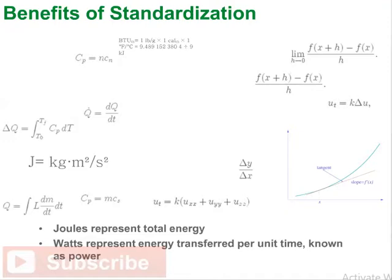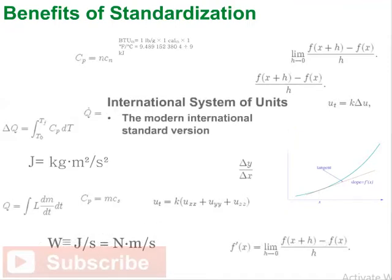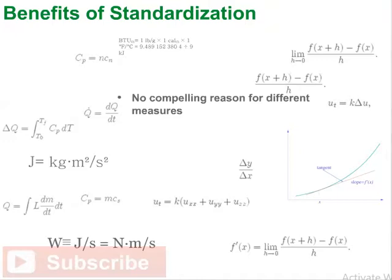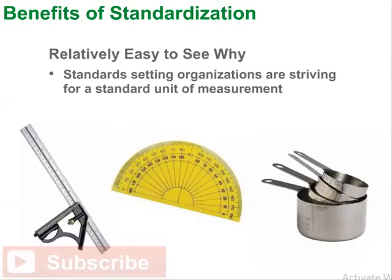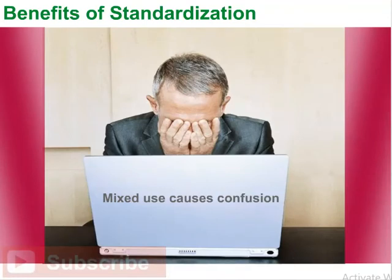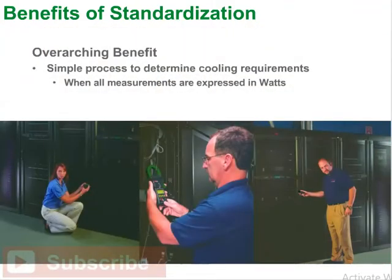Joules represent total energy, while watts represent energy transferred per unit time, known as power. The SI system — short for the International System of Units — is the modern international standard version of the metric system. There is no compelling reason why confusing historic measures need to be used, yet any and all of them might be used to express power or cooling capacities, which causes a great deal of senseless confusion for users and specifiers.